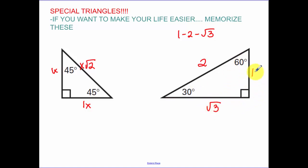So you can think of this as x. The hypotenuse is twice the smaller leg. The longer leg, the side opposite the 60 degree angle, is x times root 3.